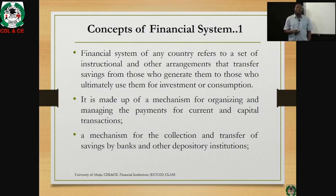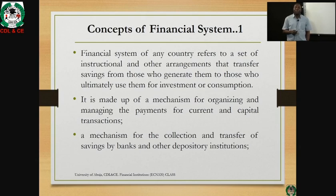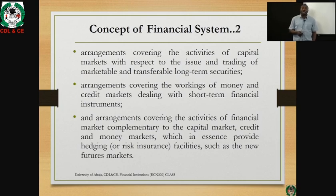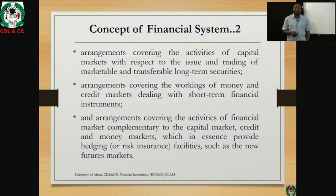Current transactions have to do with current expenditure, while capital transactions deal with capital expenditure. Financial systems also provide a mechanism for the collection and transfer of savings by banks and other depository institutions — that means banking institutions. They provide the mechanism that helps banks to collect savings through depositors. The financial system is also an arrangement covering the activities of the capital market with respect to the issue and trading of marketable and transferable long-term securities.